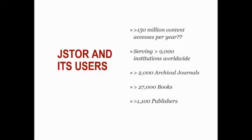JSTOR has 150 million content accesses per year, serving more than 9,000 institutions worldwide. We have more than 2,000 archival journals and more than 27,000 books. We work with more than 1,100 publishers in licensing arrangements. We had all these institutional users, but then other users wanted in — why do they have to be in a library to get the content? Over the past 10 years, JSTOR has added programs to help independent researchers and unaffiliated scholars get at the content they need.